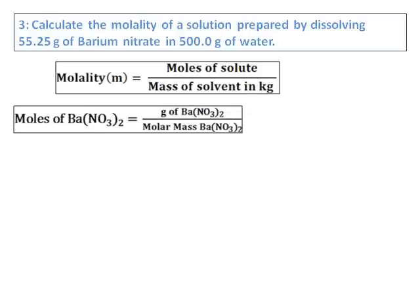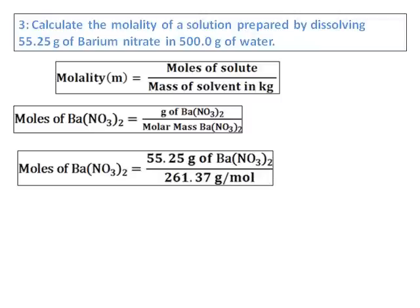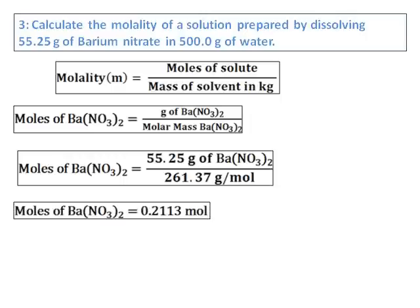Moles of barium nitrate will be equal to grams of barium nitrate divided by molar mass of barium nitrate. Substituting the values, I get the moles of barium nitrate as 0.2113.